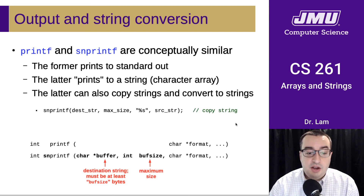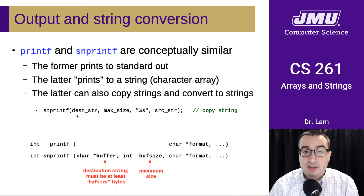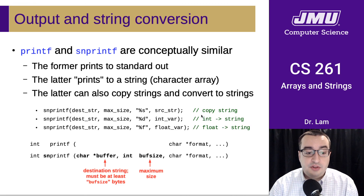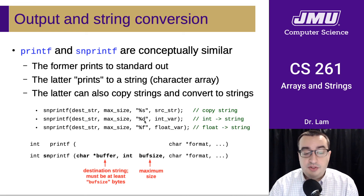Here's how you would copy a string from source string to dest string. You need to know the size of the destination string and pass that in as the maximum size, and then your format specifier is just %s. This is what you would use in order to copy source string into dest string. Just for reference, this is also how you could convert an integer to a string, or a floating point number to a string.